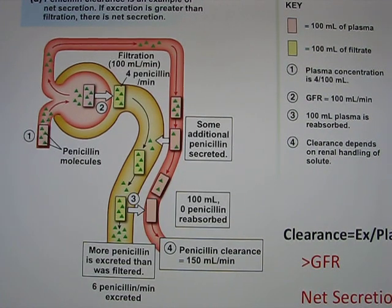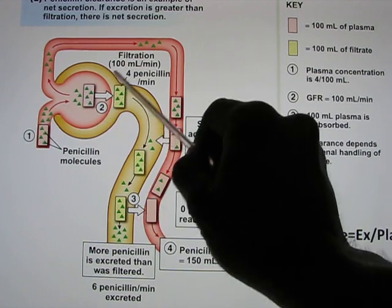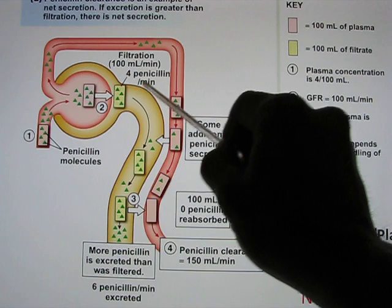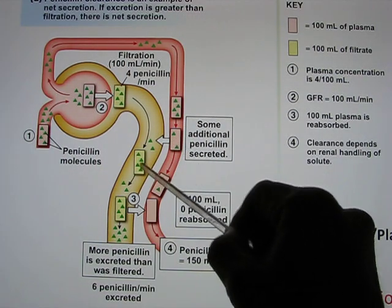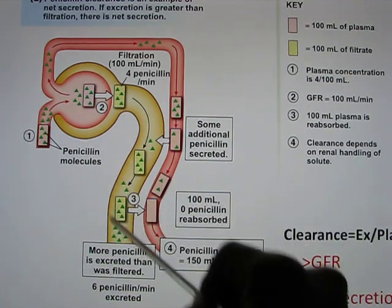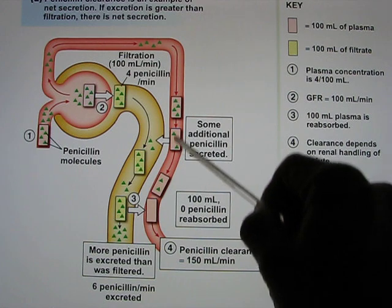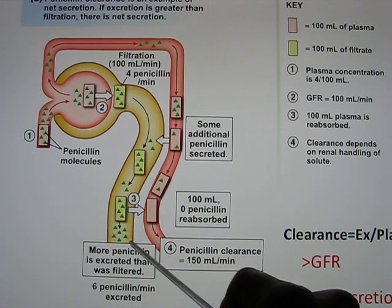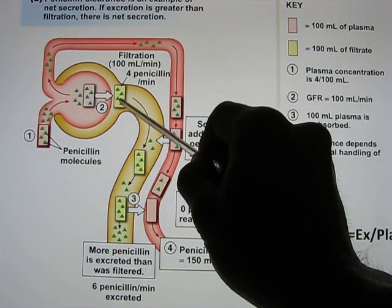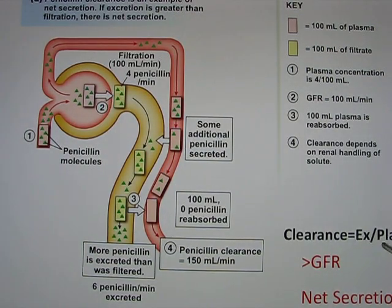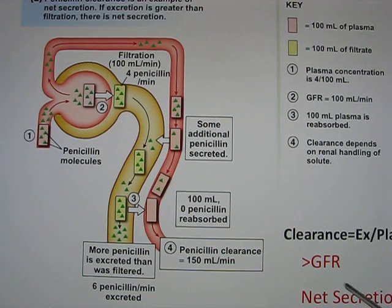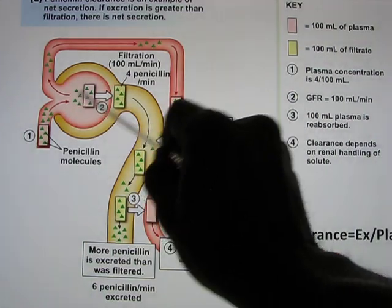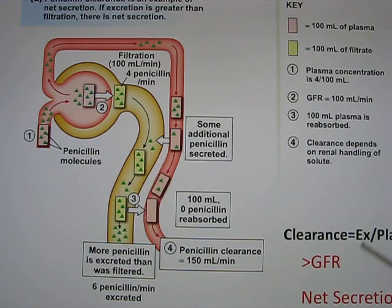Now let's look at penicillin, which involves secretion. You dump in 100 mL of blood with four penicillin, and two more are secreted in during tubular handling. So those 100 mL of blood are cleaned, plus 50 mL equivalent more through secretion — you excrete six penicillin molecules even though you only filtered in four. When we calculate the excretion rate divided by the plasma concentration, this number is bigger than GFR. So when clearance is bigger than GFR, it represents net secretion, like penicillin.